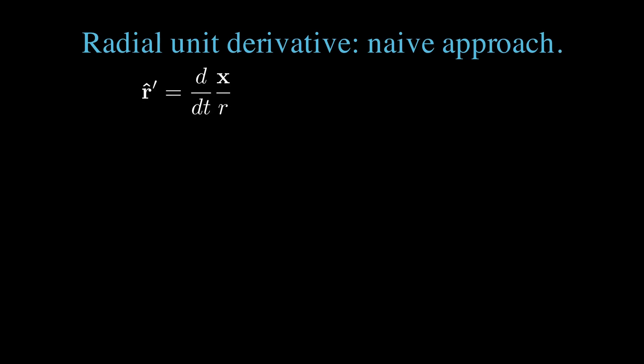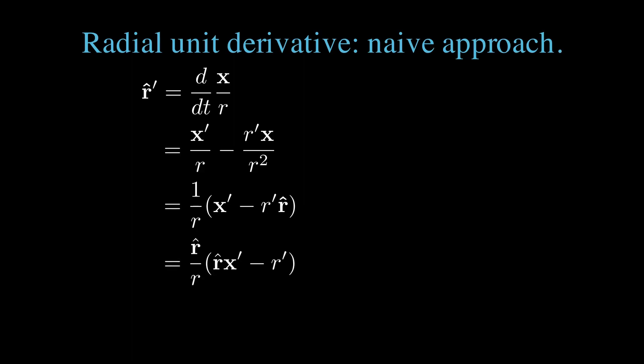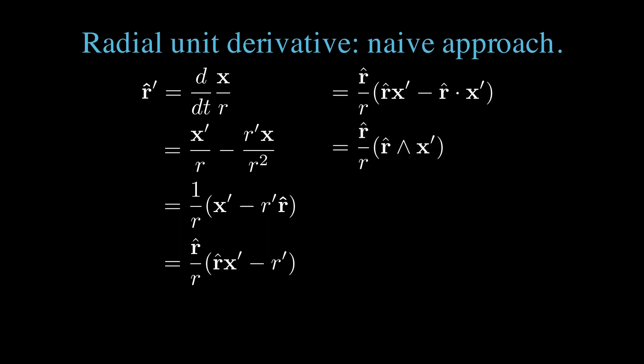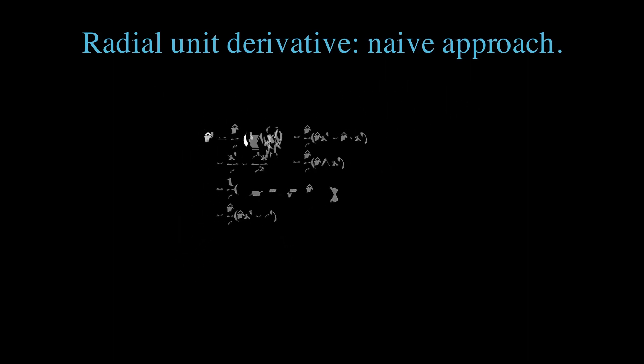We're going to derive the expression for r̂ prime — that's the derivative of the vector x divided by its length r. Using the chain rule we find x prime divided by r minus r prime over r squared, the derivative of one over r times x. Factoring out r in the denominator gives one over r all times x prime minus r prime r̂. Factoring out r̂ by writing 1 equals r̂ squared for the x prime term, we get r̂ divided by r all times the geometric product of r̂ with x prime minus r prime. Using our lemma to write r prime as r̂ dotted with x prime, we notice that we have the geometric product of r̂ with x prime minus the dot product of r̂ with x prime, which is the wedge product of r̂ with x prime. This gives us our final result: r̂ prime equals r̂ divided by r, all times the wedge product of r̂ with x prime.